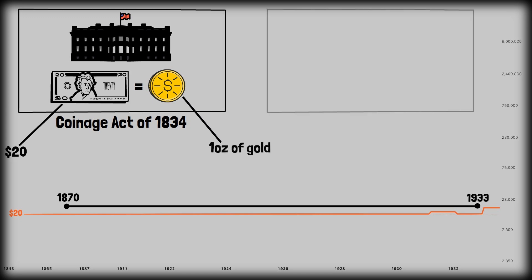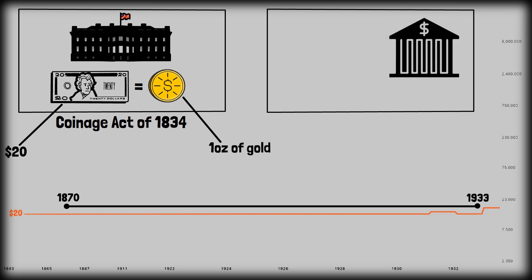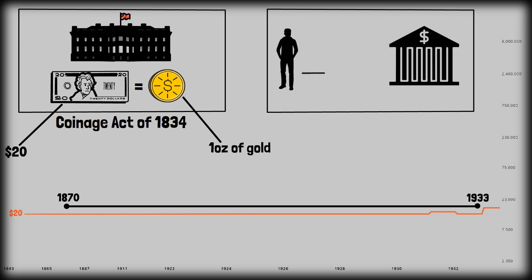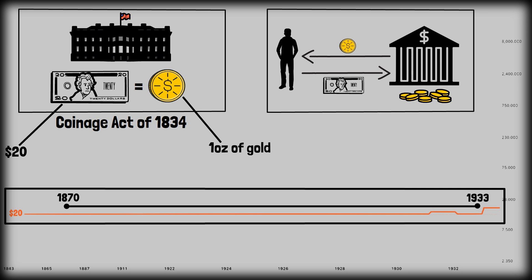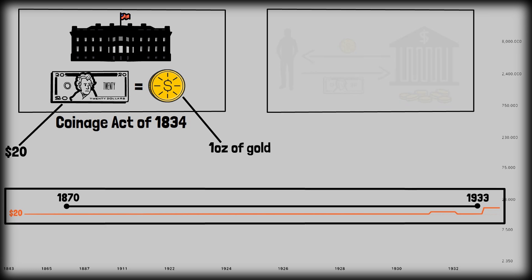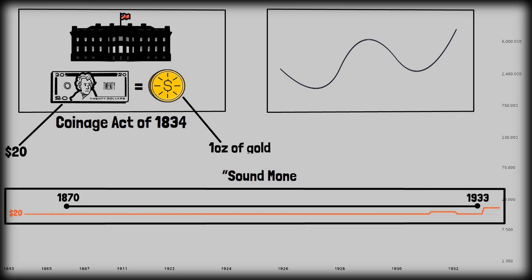The US Treasury and banks had to exchange dollars for gold on demand. This meant you could walk into a bank with paper money and get physical gold coins. So the government was obligated to keep gold reserves to back the currency. Because the price was fixed by law, it did not fluctuate like it does today — the market price was not set by supply and demand, it was legally pegged. This stability was part of what people called sound money.